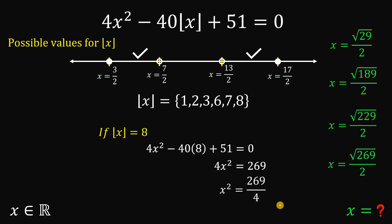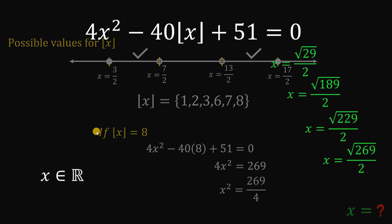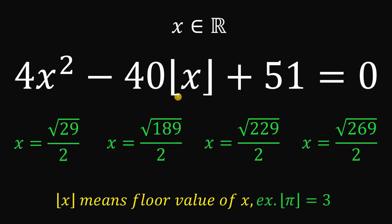And there you have it. Given the equation 4x squared minus 40 times the floor value of x plus 51 equals 0, where x is a real number, we found 4 real values of x that satisfy this equation: square root of 29 over 2, square root of 189 over 2, square root of 229 over 2, and square root of 269 over 2. And as always, we are done.